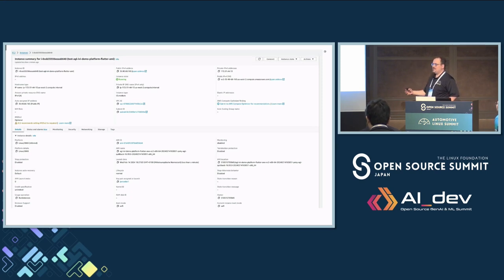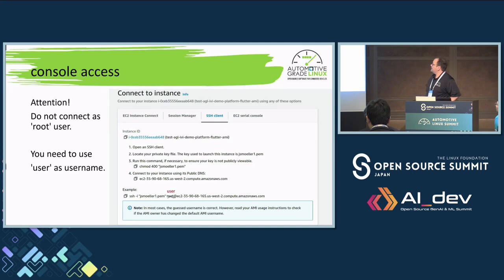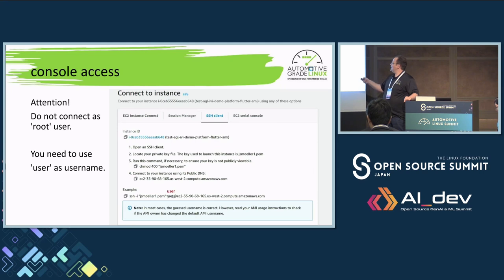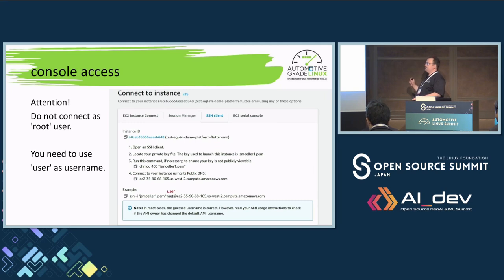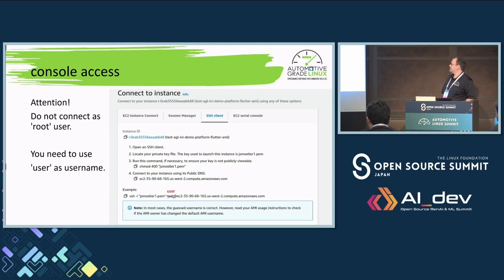One important thing: if you go through the web UI and go to the Connect to Instance button, it will tell you to connect with your private key to root. This is not the case — the meta-AWS layer injects an ID called 'user', not root. So you need to connect to 'user' at your instance. That's a change you need to be aware of; the web UI is not correct in this case.